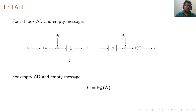The most extreme case is where both associated data and message are empty. In that case, we simply use a unique tweak 8 to encrypt the nonce, and that value is our tag.